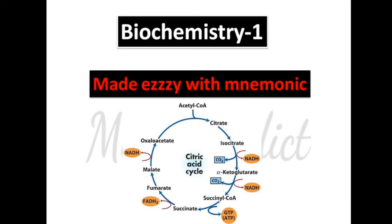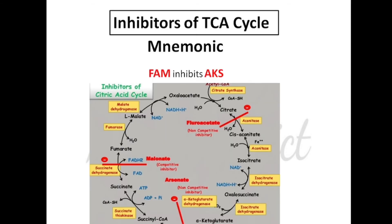The inhibitors of the TCA cycle are fluoroacetate, arsenite, and malonate. These are the three steps in which the tricarboxylic acid cycle is inhibited: the conversion of citrate to cis-aconitate, the conversion of alpha-ketoglutarate to succinyl-CoA, and the conversion of succinate to fumarate.